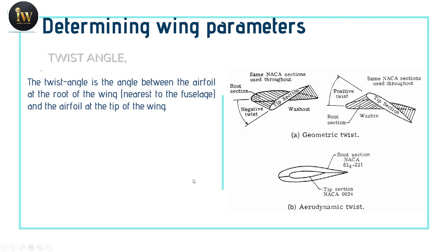Now twist can be of two types. One is geometric twist and second is aerodynamic twist. Geometric twist is further of two types: one is wash out and wash in.